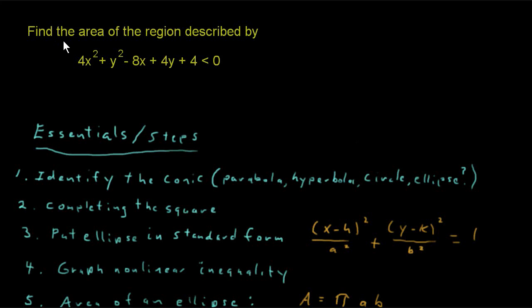Welcome, let's read this problem. It says find the area of the region described by 4x² + y² - 8x + 4y + 4 < 0.